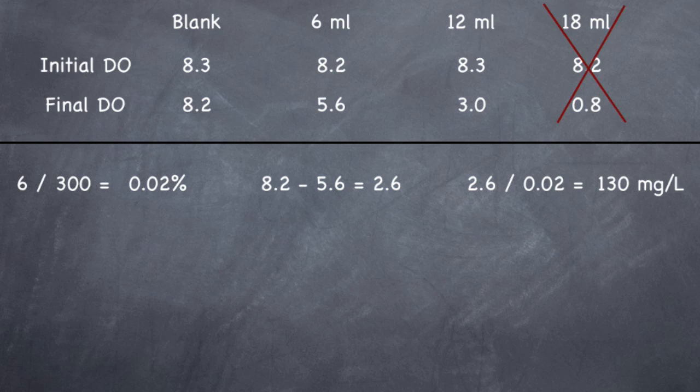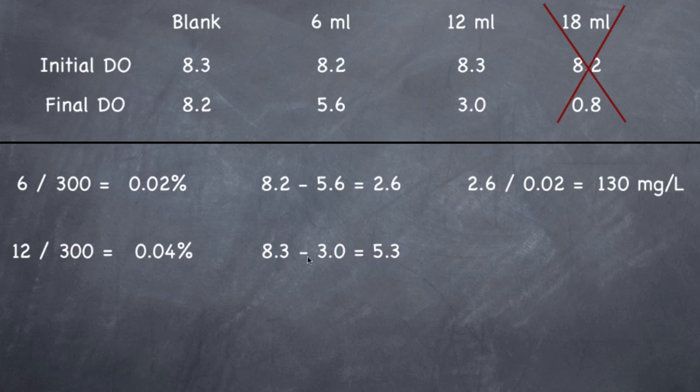Now let's do the next sample. So 12 divided by 300 will give me a sample concentration of 0.04%. So it's double this number. 6 mls doubled is 12 mls. 0.02 doubled is 0.04. So now 8.3 minus 3 gives me a DO depletion of 5.3. So 5.3 divided by 0.04 should give me a BOD of 133. So 133 milligrams per liter is the BOD of this sample.